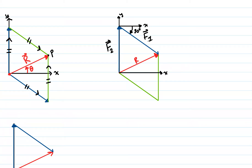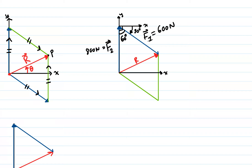We know that F2 is 800 N and F1 is 600 N. We know that this angle here is 90 degrees, so 90 minus 30 will give you 60 degrees. One of the properties of a parallelogram is that opposite angles are congruent. So this angle has the same measure as this angle — so this is 60 degrees and this is 60 degrees. Opposite angles are the same.